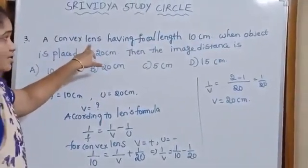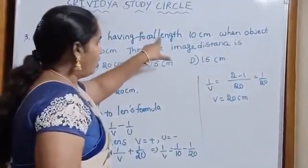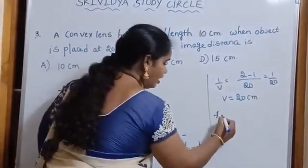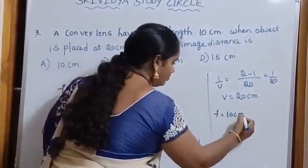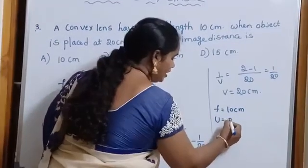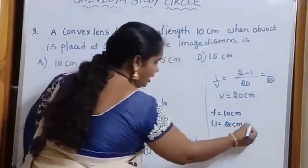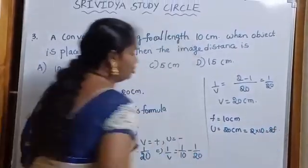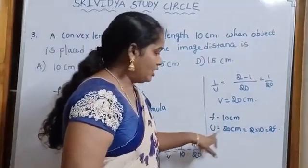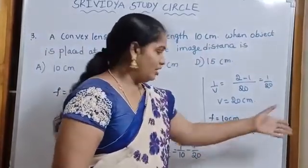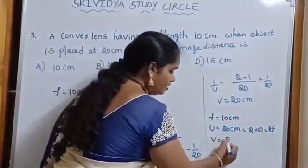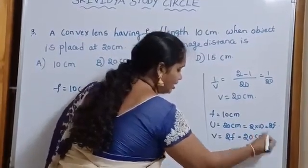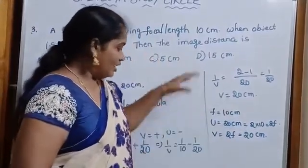Another method is, already we know the 6 positions of convex lens ray diagrams. Here given focal length is 10 cm, F is equal to 10 cm. Object is placed at 20 cm, it means 20 can be taken as 2 into 10, it means U is equal to 2F. Already we know that object is placed at 2F, then image is also found at 2F. Then V is equal to 2F, we get 20 cm. This is the shortcut method.